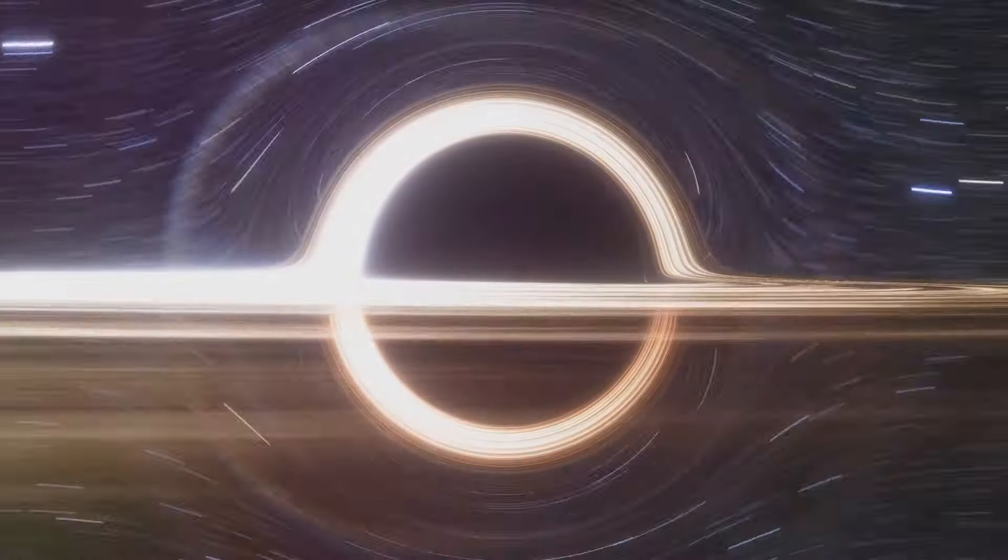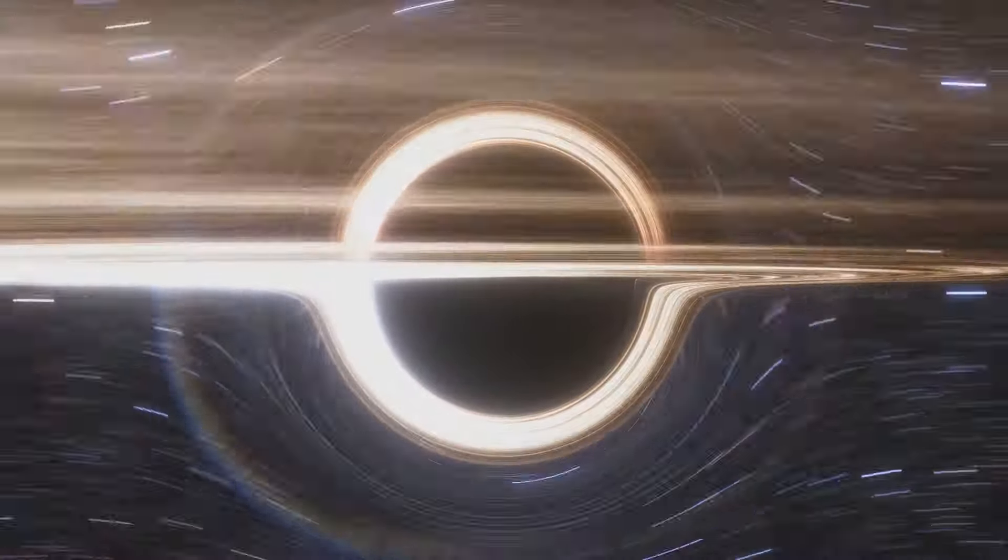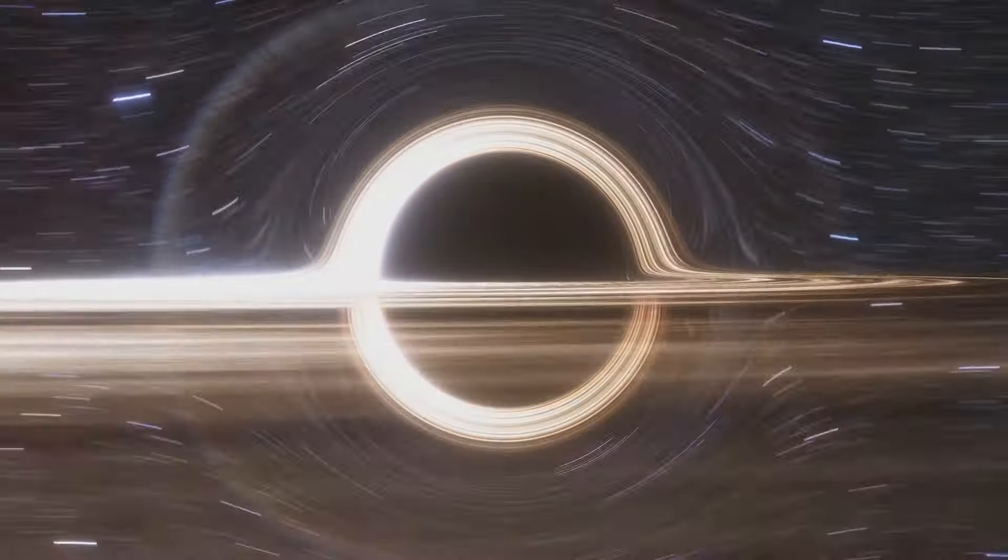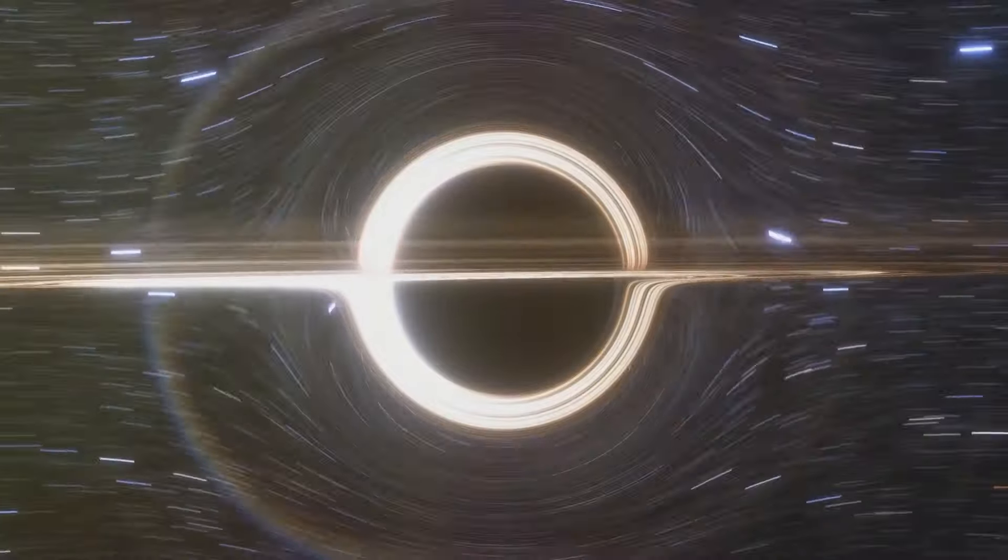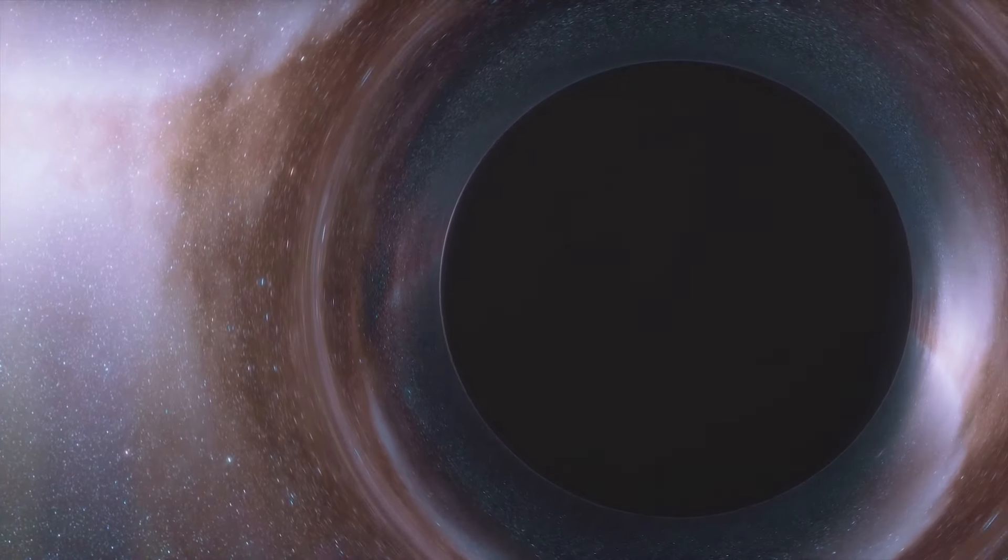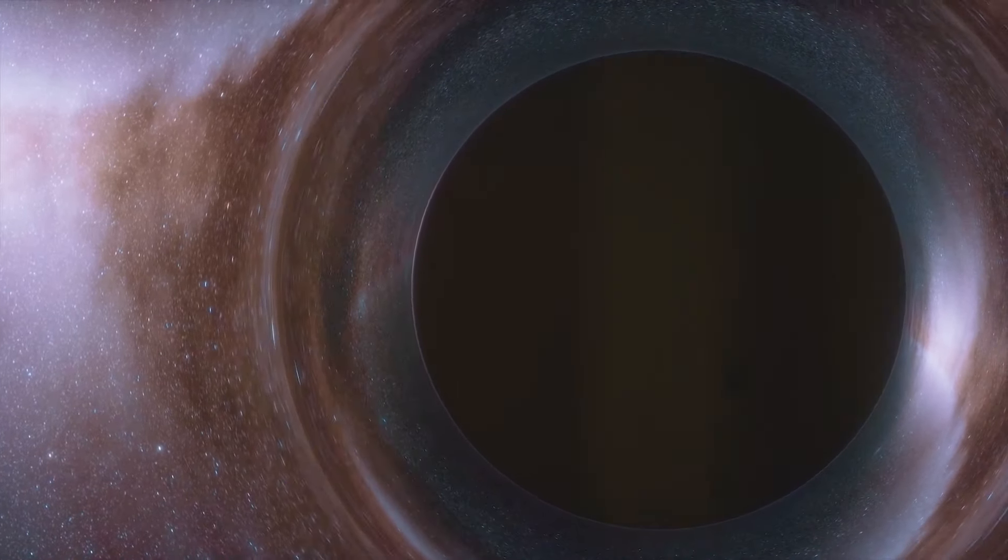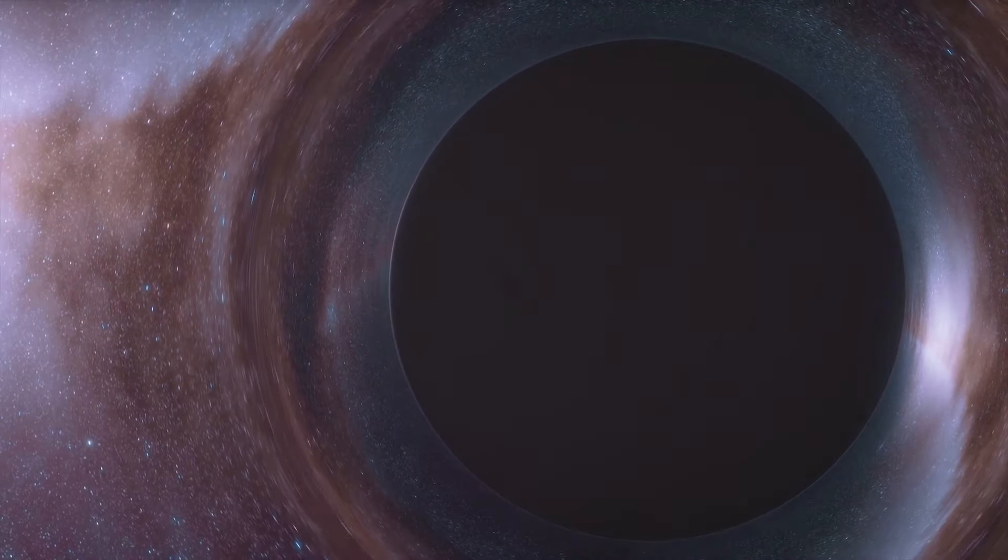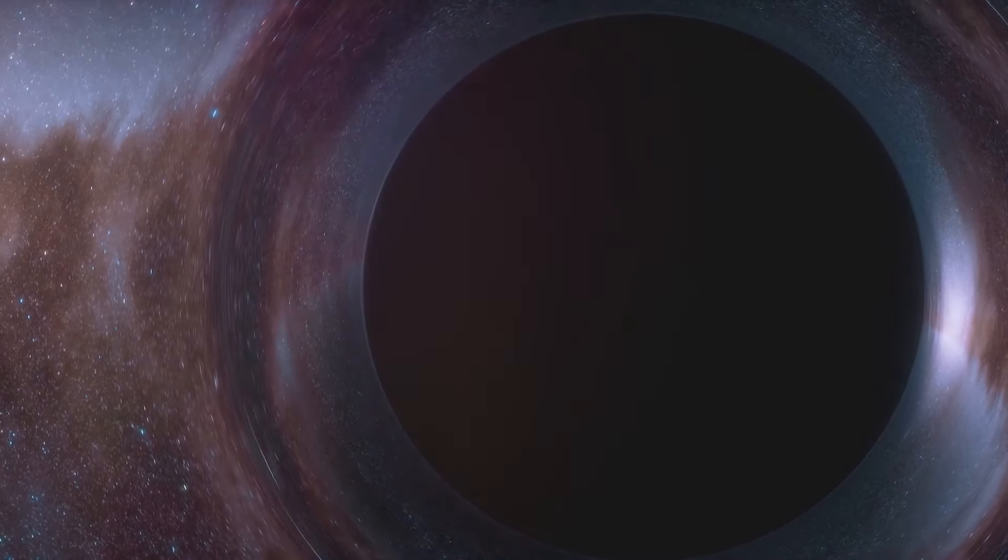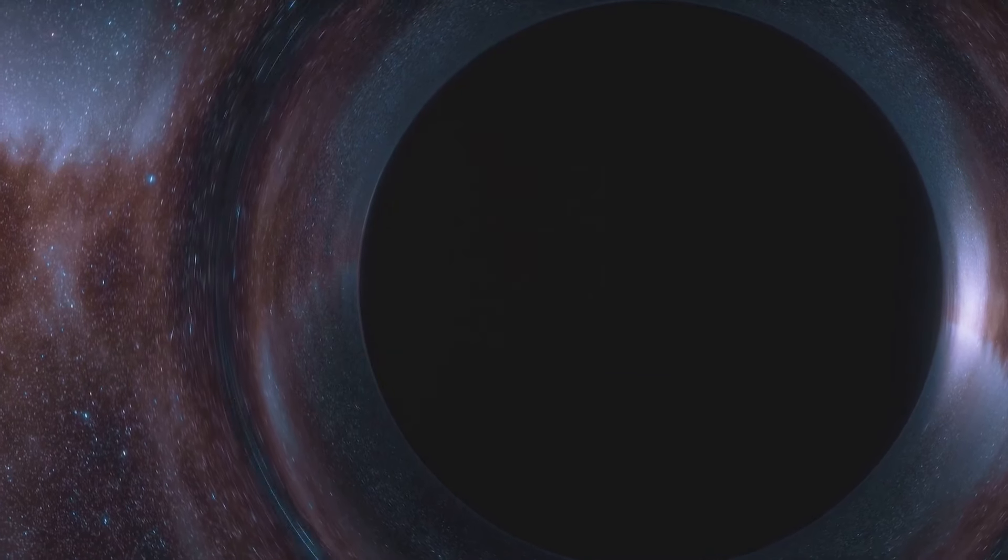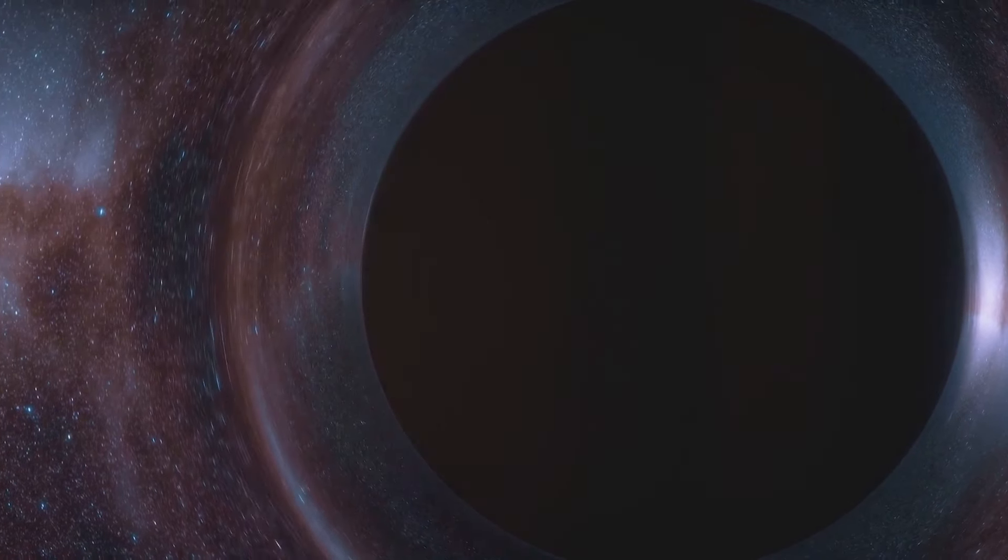One such method is by observing the phenomenon known as gravitational lensing. This is a process where light from distant galaxies is bent and distorted as it passes through the gravitational field of dark matter. It's as if the universe is wearing a pair of glasses, distorting our view of distant stars and galaxies. This distortion provides a sort of cosmic roadmap, indicating where large amounts of dark matter might be hiding.